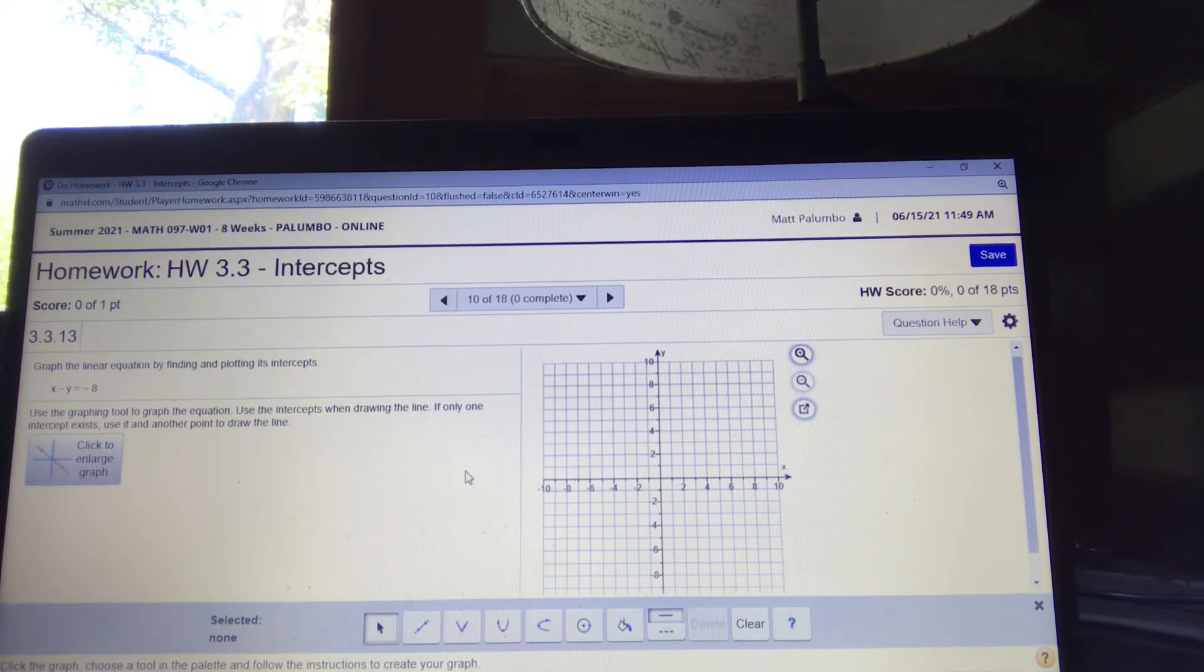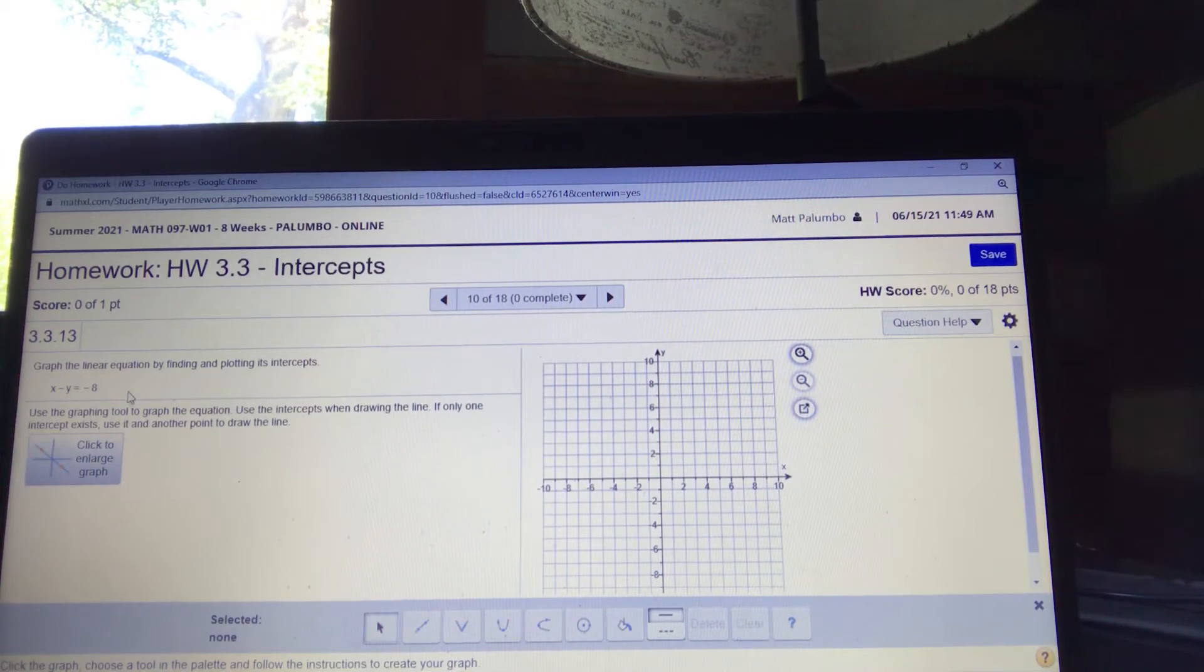Okay, I'm going to show you how to graph in MyMathLab. So first I'm going to graph a linear equation right here on the problem, x minus y equals negative 8. And this problem is asking me to graph the linear equation by finding and plotting its intercepts. So I'll go ahead and do that.